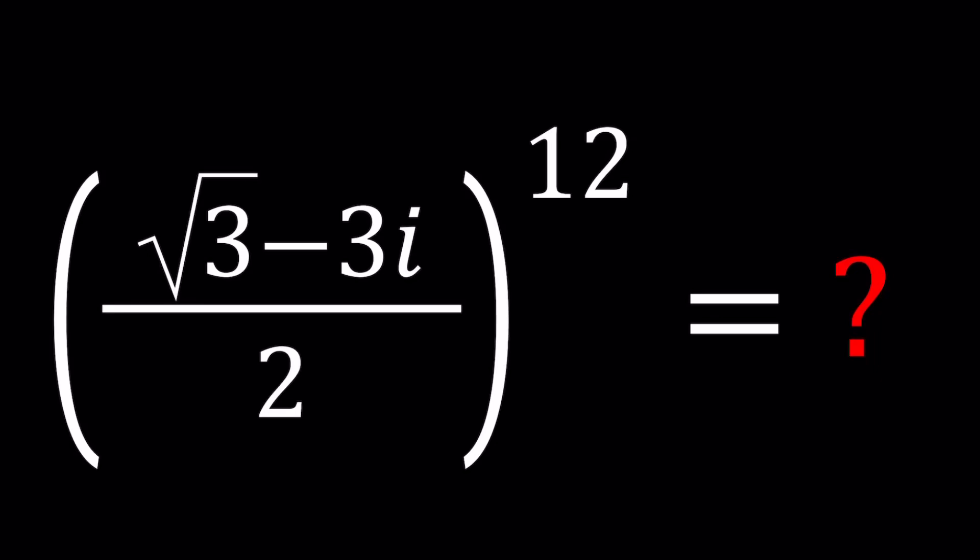Hello everyone, welcome to a plus bi. This channel is all about complex numbers and in this video we're going to be simplifying a complex expression. We have square root of 3 minus 3i divided by 2 all to the power 12 and we're going to simplify this expression. How simple can this get? Let's go ahead and take a look.